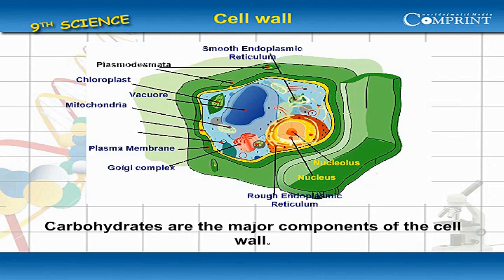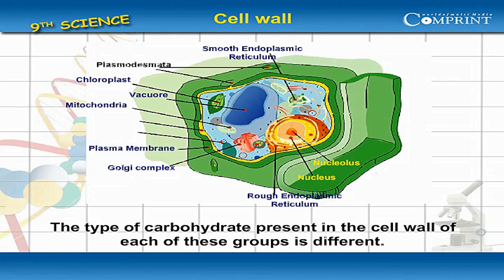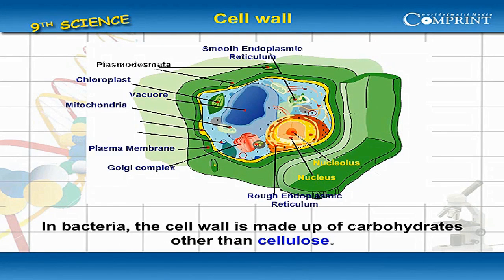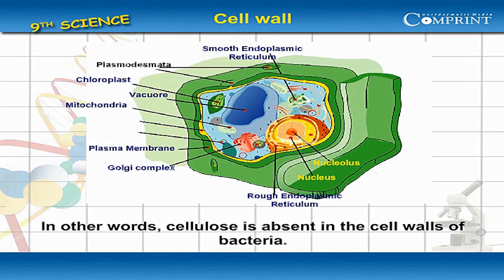Carbohydrates are the major components of the cell wall. The type of carbohydrate present in the cell wall of each of these groups is different. In bacteria, the cell wall is made up of carbohydrates other than cellulose. In other words, cellulose is absent in the cell walls of bacteria.